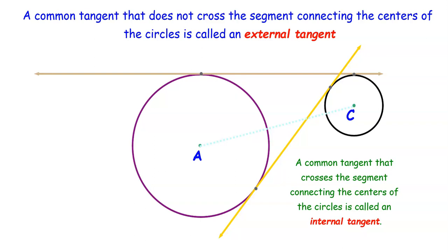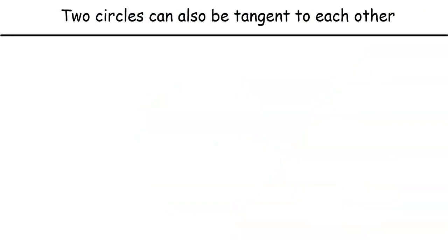There is one more way we can talk about tangency in circles. We've seen what happens when a circle is tangent to a line and lines tangent to multiple circles. But circles can also be considered tangent to each other. Tangent circles are tangent to the same line at the same point, and there are two different ways this can happen.